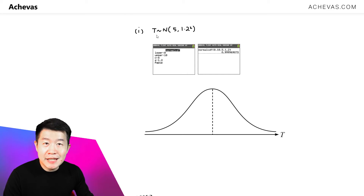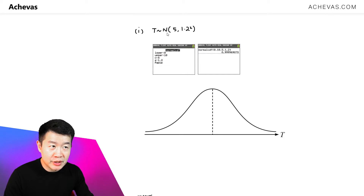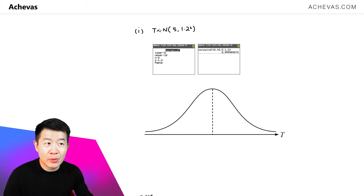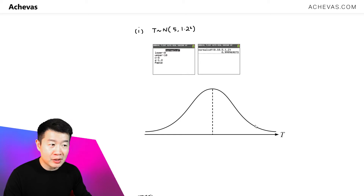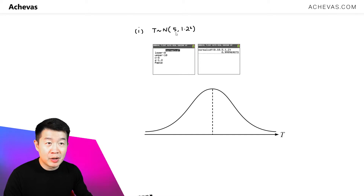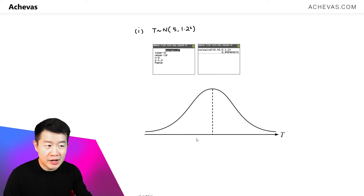We are given that T follows a normal distribution, and we are supposed to be sketching a graph that represents this distribution. That is why we will be expecting ourselves to be sketching a bell curve — a bell curve that is going to be symmetrical about the mean of the normal distribution, which is 5.